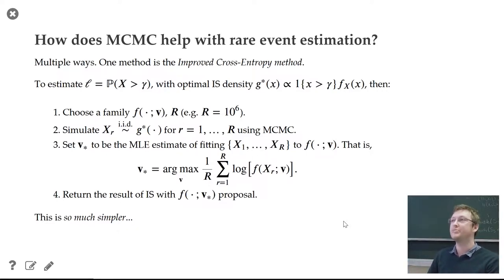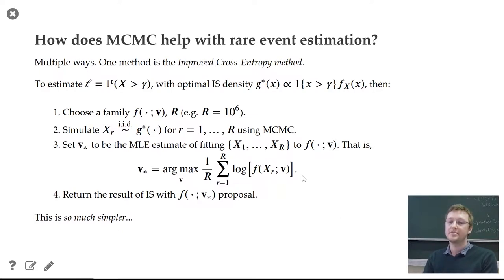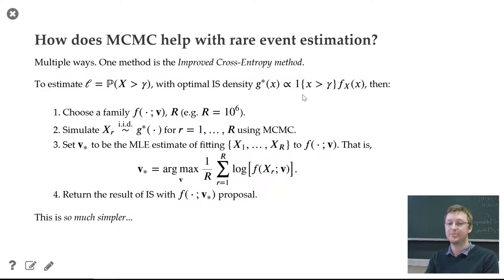Before that, I thought I'd answer the question: how does MCMC relate to the topic of this course — rare event estimation? There are lots of ways that being able to sample from any distribution helps, but perhaps the most relevant to what you've already been studying is this thing called improved cross entropy. With the original cross entropy you are sampling from a sequence of distributions, getting closer and closer to the g-star distribution, which is the optimal importance sampling density, proportional to the original density conditioned on the rare event actually happening. But if you can sample from that density using MCMC, you can do the following.